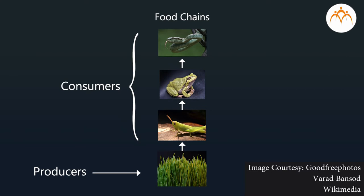Consumers are directly or indirectly dependent on producers. Usually, the number of producers in an ecosystem is the highest, so they occupy the base of the energy pyramid. If any link in a food chain is disturbed, it affects the whole chain; therefore, the survival of each link is necessary to maintain stability.